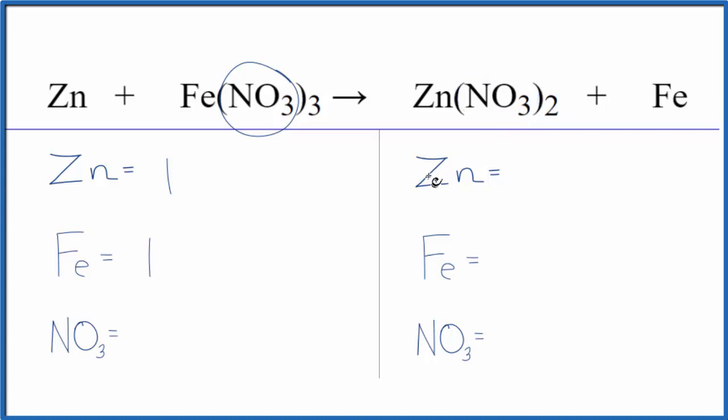So we can make this equation a lot easier to balance if we just say we have one nitrate times the three, three nitrate ions. On the product side, we have one zinc, one iron, and two times the one nitrate here, we have two nitrate ions. It makes it a lot easier to balance when we just have these smaller numbers to deal with.